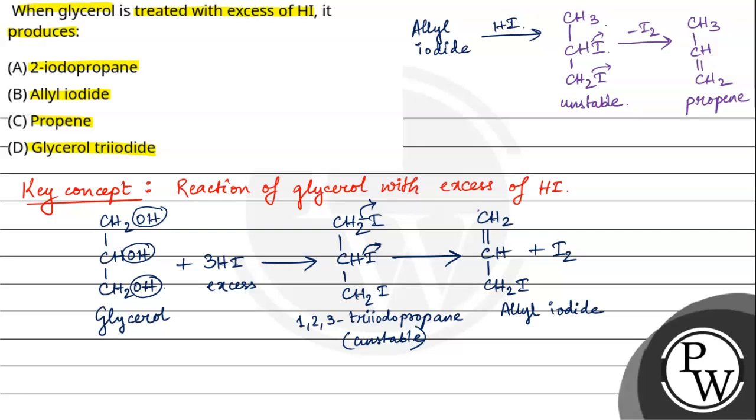Now, propene will react and this bond will open. So, the final product will be CH3CHICH3. That is, 2-iodopropane. That is the final product when glycerol is treated with excess of HI.